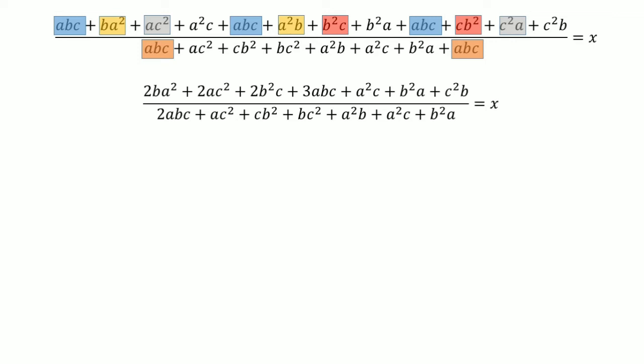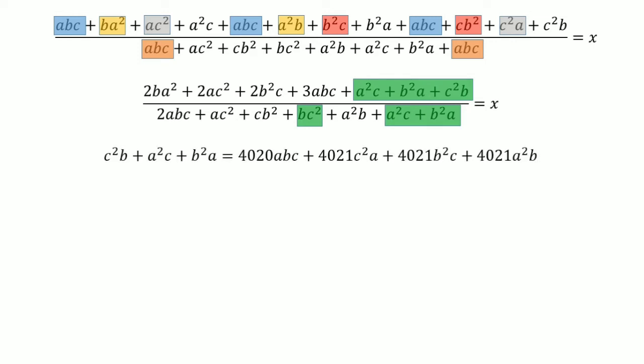Looking at the common terms in the denominator and numerator, this should match our first equation which we obtained after breaking down the given information. So: C squared B plus A squared C plus B squared A equals 4020 ABC plus 4021 C squared A plus 4021 B squared C plus 4021 A squared B.